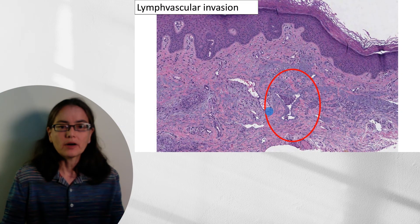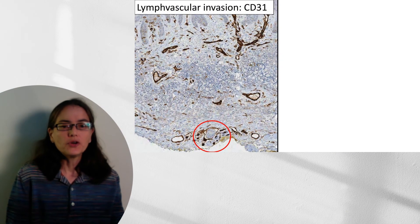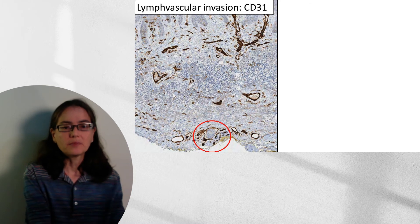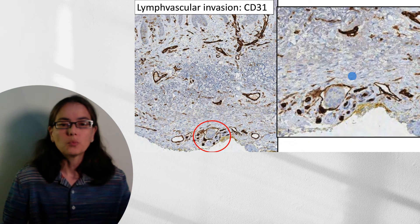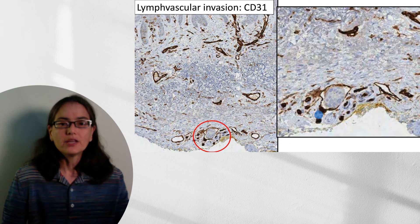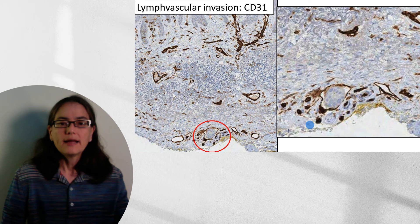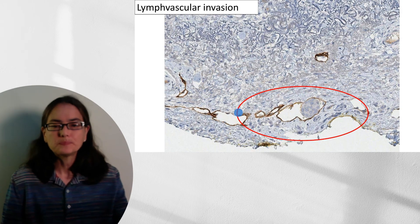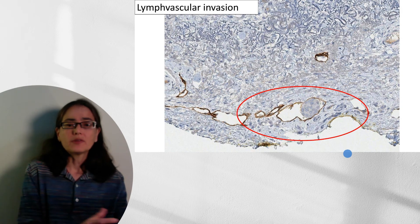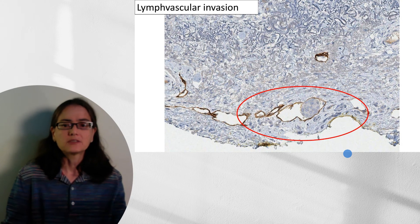On higher power, we can see exactly where that tumor is. As an aside, pathologists use special stains to confirm vascular invasion: CD31 is specific for endothelial cells and highlights blood vessels in the dermis, including around the bit of tumor. Another stain is specific for lymphatic vessels. You may see in a pathology report that with special stains, lymphovascular invasion was identified.